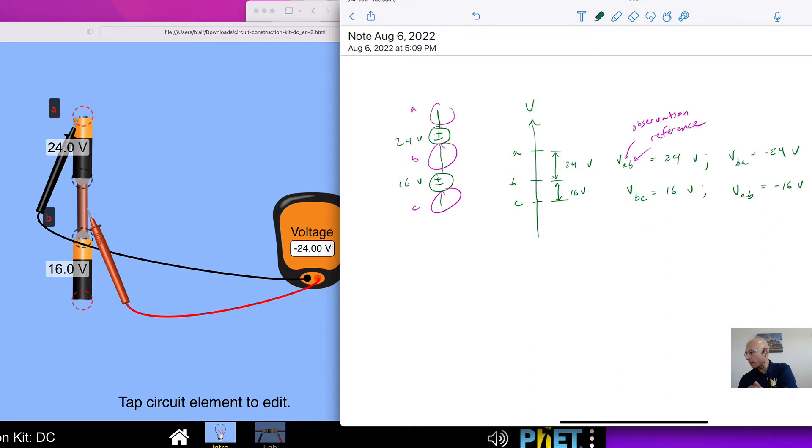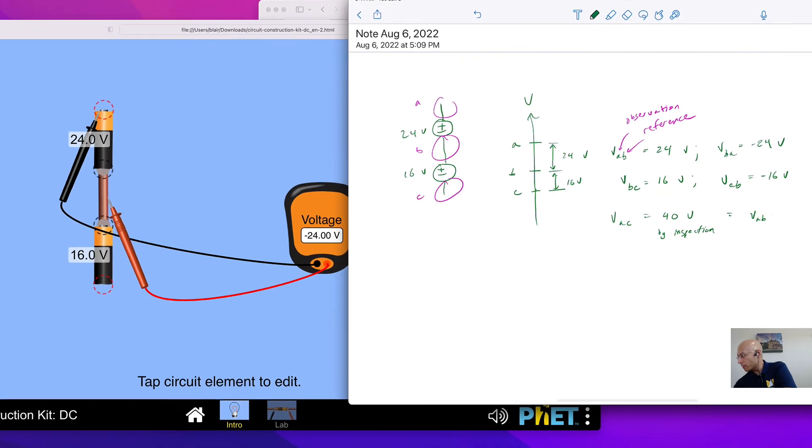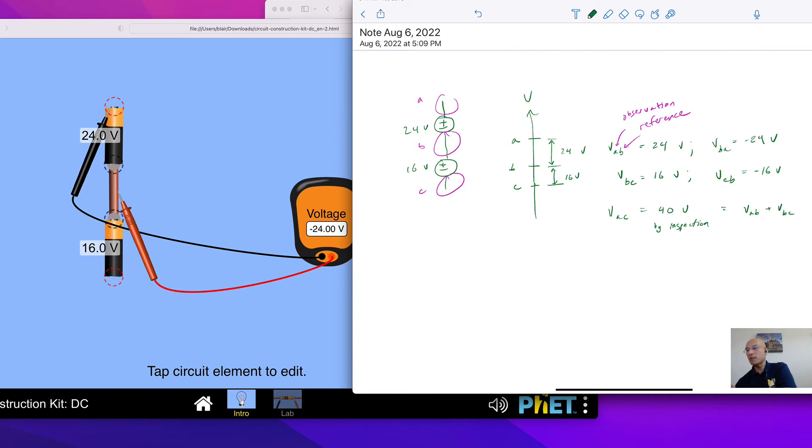Now looking at this diagram, it would be straightforward then to say that VAC. We're asking ourselves in VAC, how much higher is A than C? Looking at the diagram, it's clearly 40 volts, and so we'll just say by inspection. But there's another way we could do it also. You could recognize that VAC is VAB plus VBC. So more mathematically, it's VAB and VBC added together. And similarly, we could just then write VCA is negative 40.